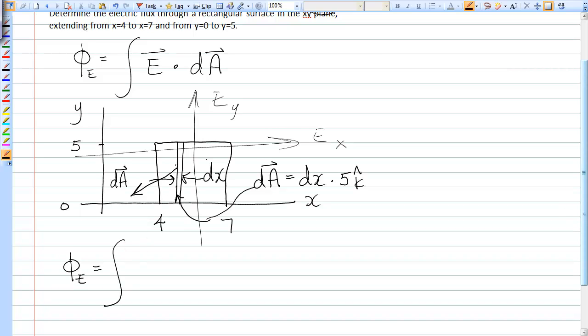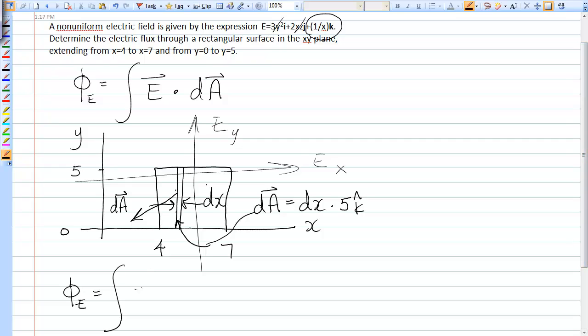But you can still write the whole thing out. You can go 3xy-squared i-hat plus 2xz j-hat plus 1 over x k-hat. Whoops, there's no x there. Eraser.